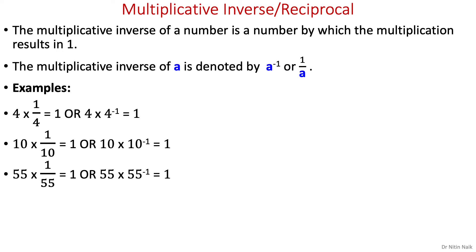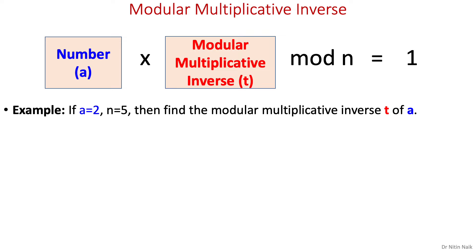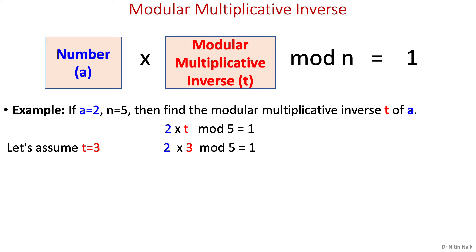So what is multiplicative inverse in modular arithmetic? Modular multiplicative inverse is different from the regular multiplicative inverse, where the mod n of the product of a number and its multiplicative inverse equals 1, as shown in the figure. For example, here a equals 2 and n equals 5, and we need to find the modular multiplicative inverse t of a. Assuming t equals 3, we calculate 6 mod 5 which equals 1, satisfying the condition. Therefore 3 is the modular multiplicative inverse of 2.